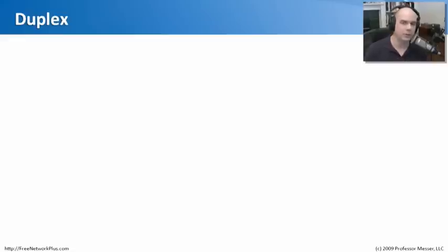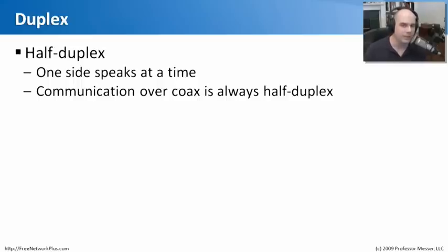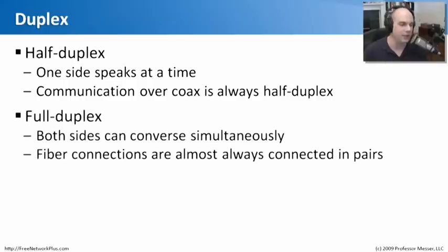There's a concept in networking called duplexing, which allows us to transmit information in multiple directions simultaneously. Half-duplex is where only one side can speak at a time — you can think of half-duplex as a telephone conversation where while you're talking, the other side can't be talking. Over coax, where you have that one conductor, you have to send traffic down one side and wait before sending down the other. Both sides can't be talking at the same time, so on a coax connection you will always have a half-duplex connection.